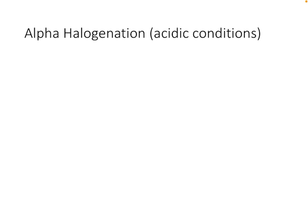Hello, in this video we're going to start discussing reactions that we can perform at the alpha position. The first one is called alpha halogenation and we can perform this either under acidic conditions or basic conditions. So let's start with acidic conditions.